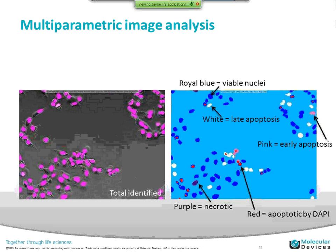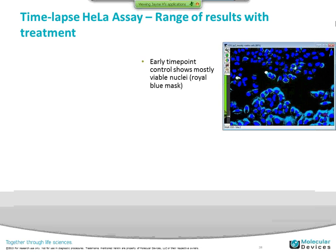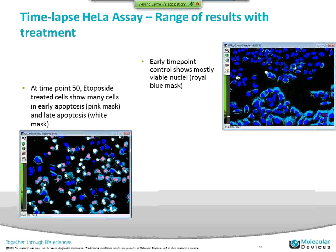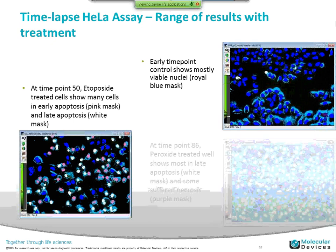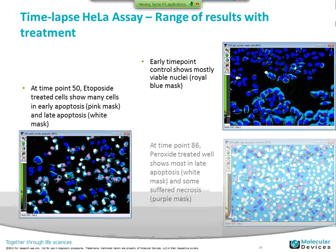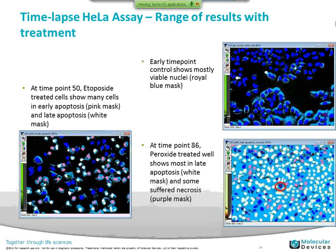All cells are identified and a mask is produced. At an early time point, mostly viable nuclei are shown in the royal blue mask for the control well. At time point 50, etoposide-treated cells show that many were in early or late apoptosis — shown by a pink mask for early and white mask for late apoptosis. At the end of the experiment, in a peroxide-treated well, most cells were in late apoptosis shown by the white mask, with a few necrotic cells in purple — though it's hard to see on the WebEx.